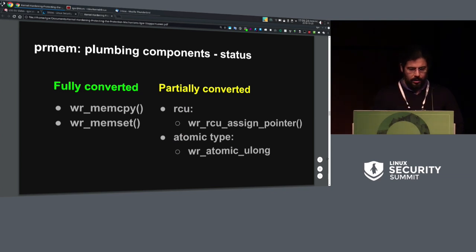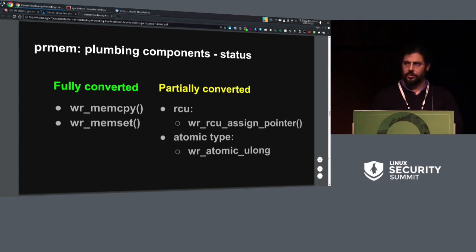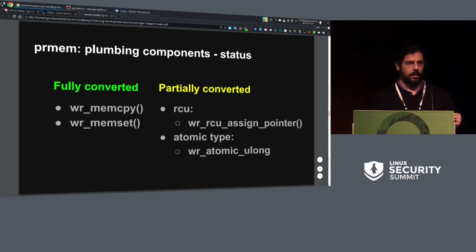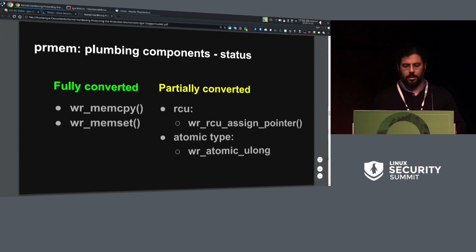This is what I have implemented so far of the plumbing. There is some discussion ongoing about whether it should be like this or not. I do not have an answer — I guess that's the point of asking for review. My takeaway is I need a write-rare implementation of the basic functionality: memcopy, memset, assignment of a pointer, and handling of atomic operations.